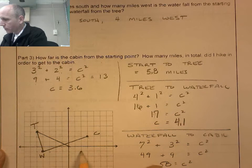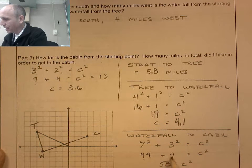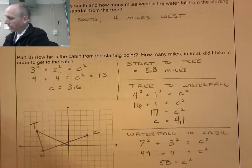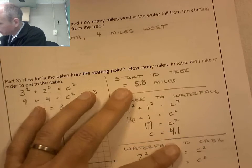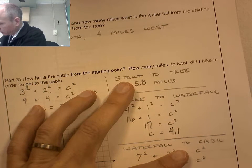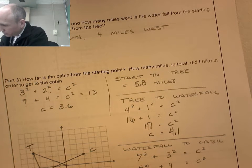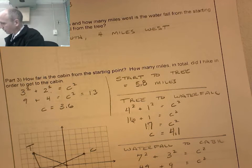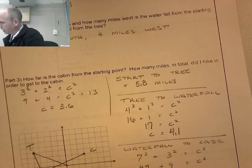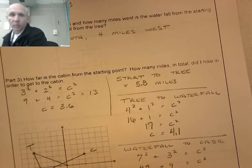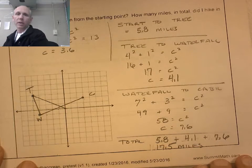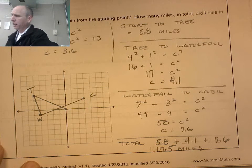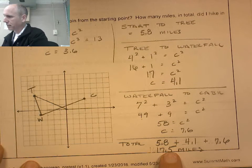Waterfall to cabin is 7 and 3, 49 and 9, takes me to 58. Square root of 58 is 7.6. Now I have to add up all those numbers to get my total distance. So 5.8 plus 4.1 plus 7.6 is 17.5 miles. So I found this distance, that distance, that distance. I added them all together to get my total distance, which is 17.5 miles. That's how far it is to the total length of my hike.